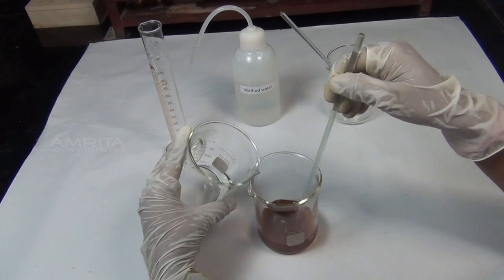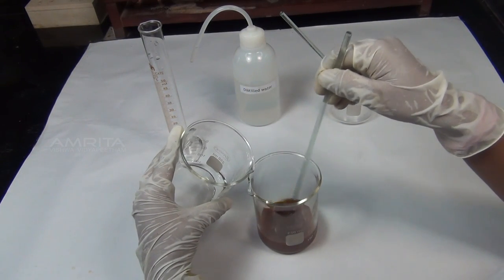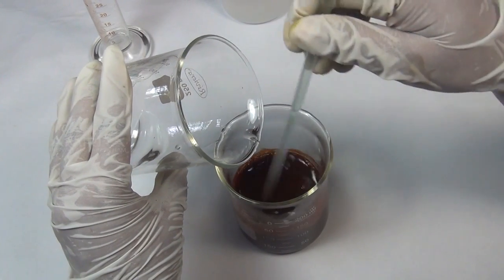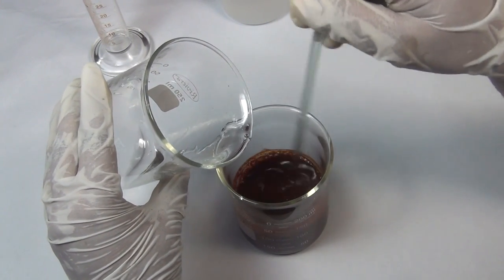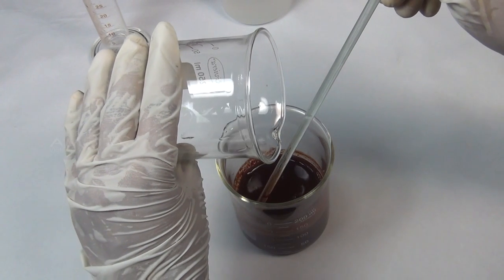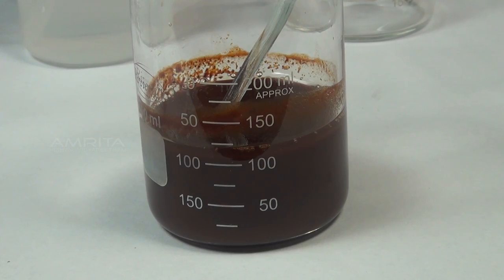Add potassium hydroxide solution to ferric chloride solution in small proportions with constant stirring using a glass rod. Ferric chloride reacts with potassium hydroxide to form a brown precipitate of ferric hydroxide.